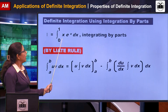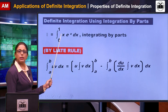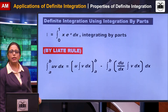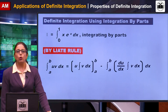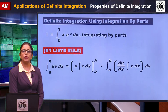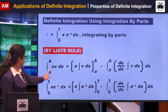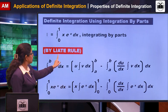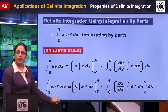Example: integration from 0 to 1 of x·eˣ dx. The function x is an algebraic function, and eˣ is an exponential function. According to the LIATE rule, the algebraic function comes first and the exponential function comes later. Therefore, x will be the function u and eˣ will be the function v.